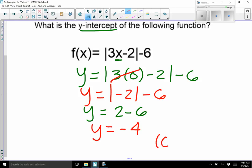So as a point, I would write it 0 for my x-value and negative 4 as my y-intercept.